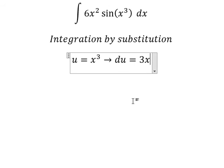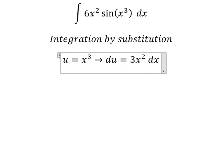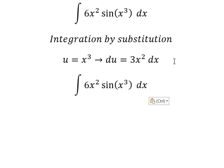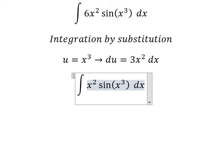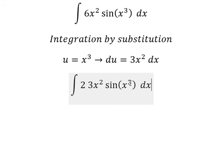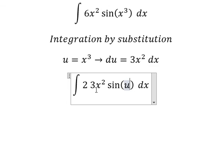We get du = 3x² dx. We know that gives us number 2 multiplied by 3x². The 3x² dx we substitute by du.